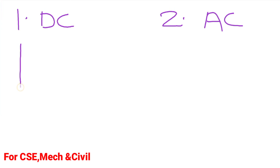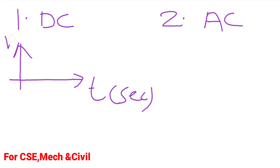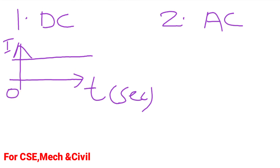If we consider time on the x-axis and current or voltage on the y-axis, and the current is maintained constant with respect to time, then it is known as DC current. The DC current magnitude remains constant with respect to time — that is the graphical representation of DC current.